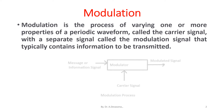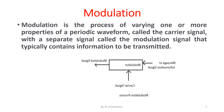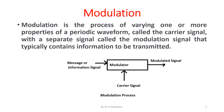Here is a representation of a modulation process. The message or information signal is applied to the modulator. The carrier signal is also applied to the modulator, and the modulated signal is obtained as the output from the modulator.